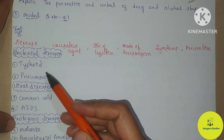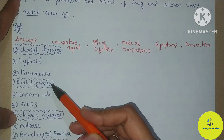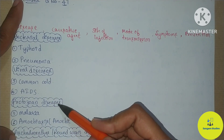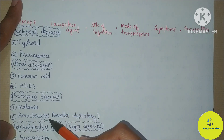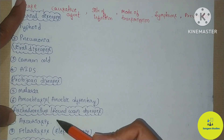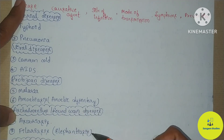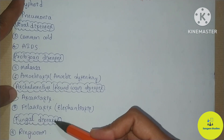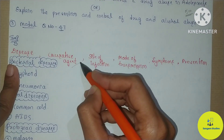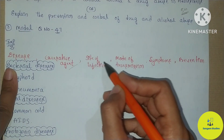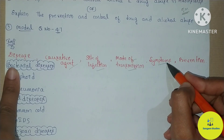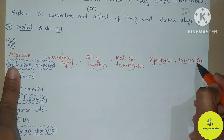Bacterial diseases: typhoid and pneumonia. Viral diseases: common cold and AIDS. Protozoan diseases: malaria and amoebiasis. Helminth diseases: roundworm — ascariasis and elephantiasis. Fungal diseases: ringworm. For these 9 diseases, know the causative agent, site of infection, mode of transmission, symptoms, and prevention methods.